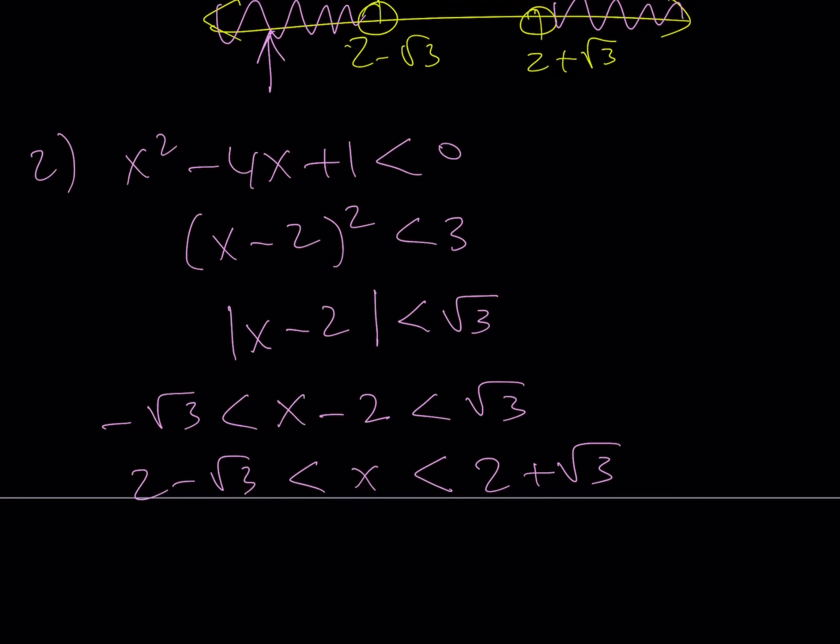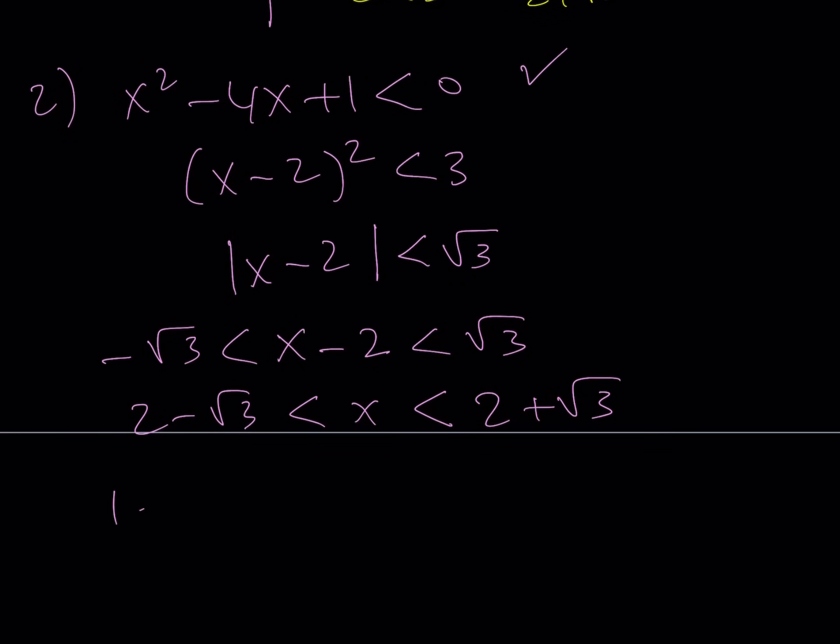And now, since my expression inside the signum function is negative, the output is going to be negative 1, and 1 minus 2x is supposed to be negative 1. From here, we get 2x is equal to 2, which means x equals 1. And obviously, 2 minus root 3 is going to be like 2 minus 1.7-ish. So, this is like 0.3-ish, and this is going to be like 2 plus 1.7-ish, 3.7-ish. Obviously, my 1 is going to be in between, so it's also a valid solution.